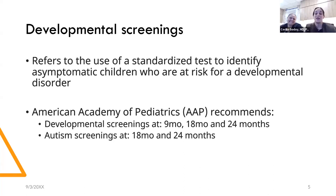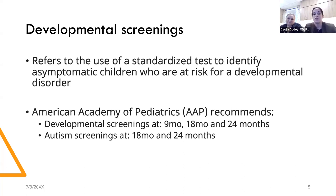Developmental screenings are standardized tests to identify asymptomatic children who are at risk for developmental delays. These screening tests are recommended at nine months, eighteen months, and twenty-four months. We also have specific screenings for autism done at eighteen and twenty-four months. Different practices may use certain standardized tests, but it should always be a standardized test.